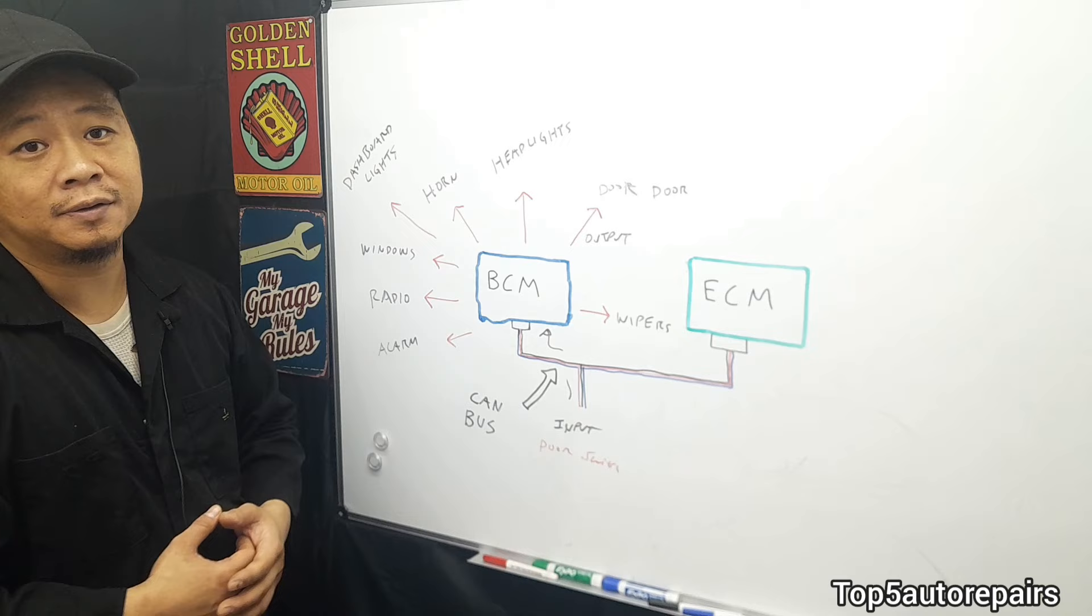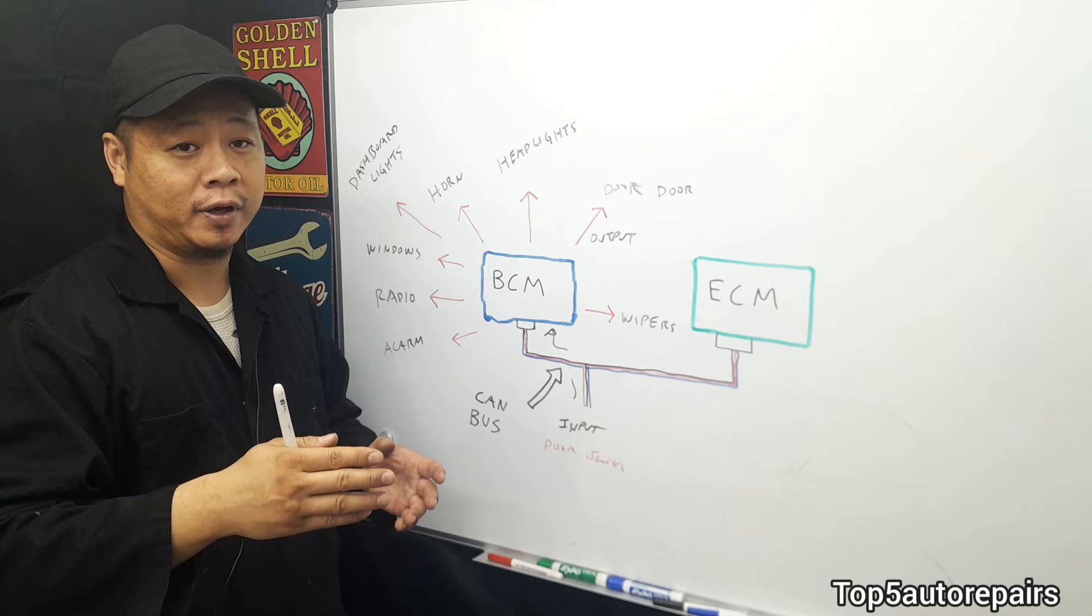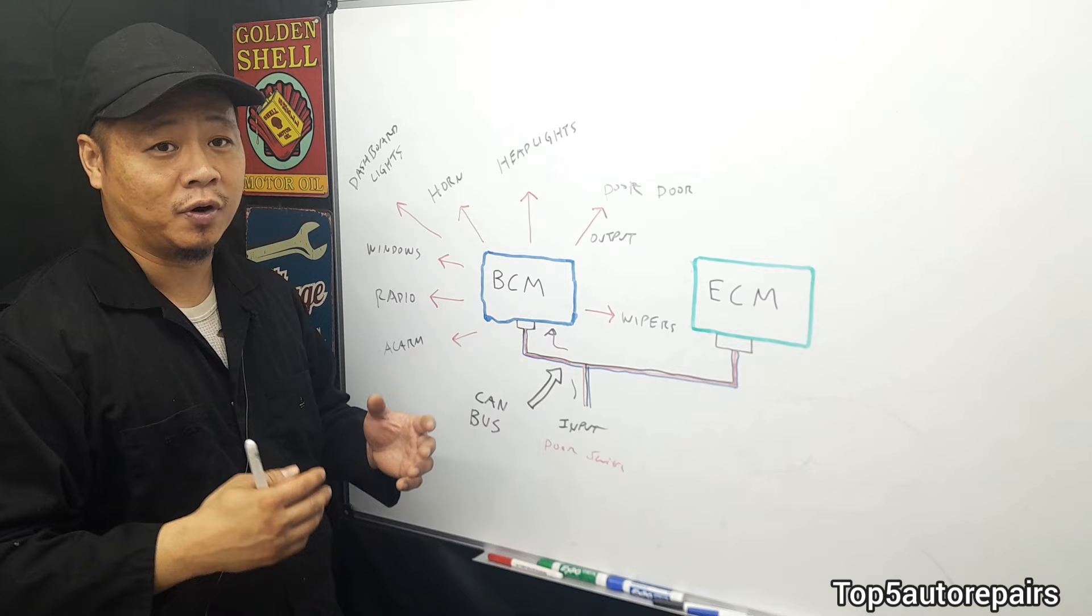So the BCM is usually located in a safe spot, usually somewhere in the cabin, such as underneath the dashboard. It could be located inside the center console, behind the kick panel, or sometimes inside the trunk too. So the chances of the BCM going bad by external factors are going to be kind of low.